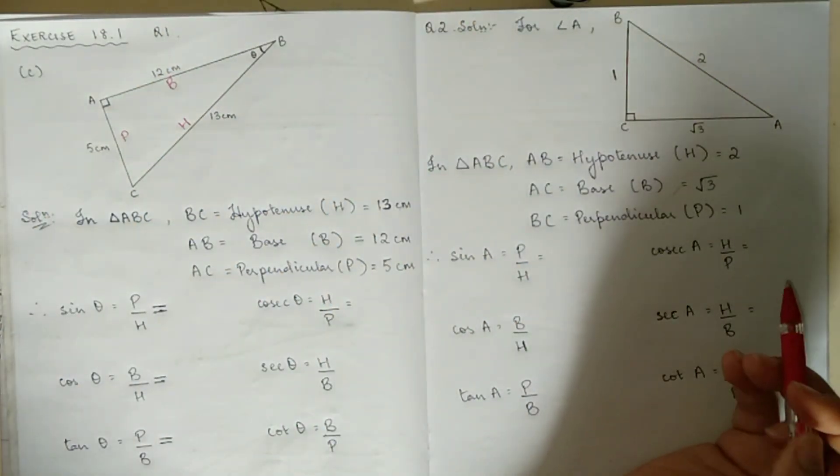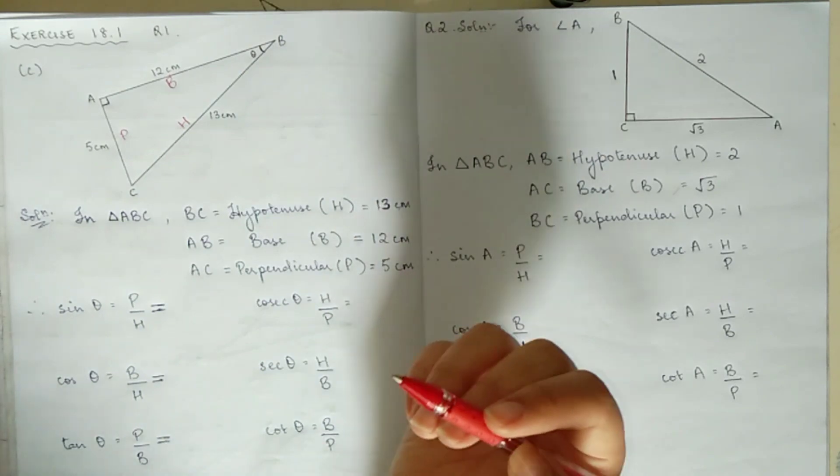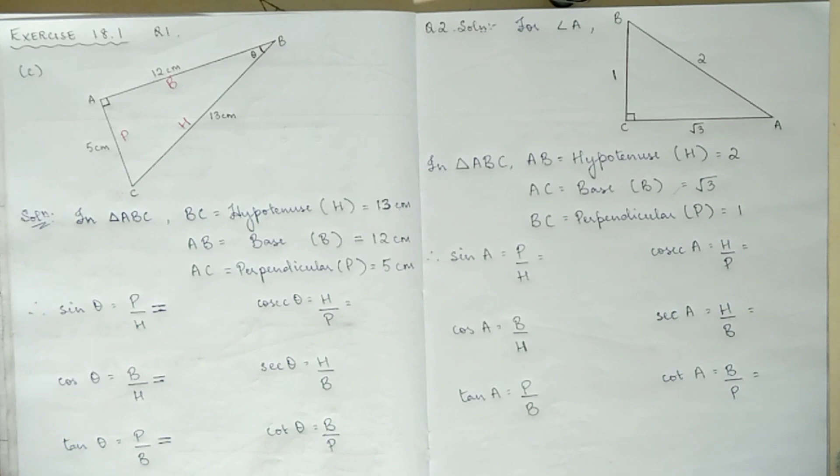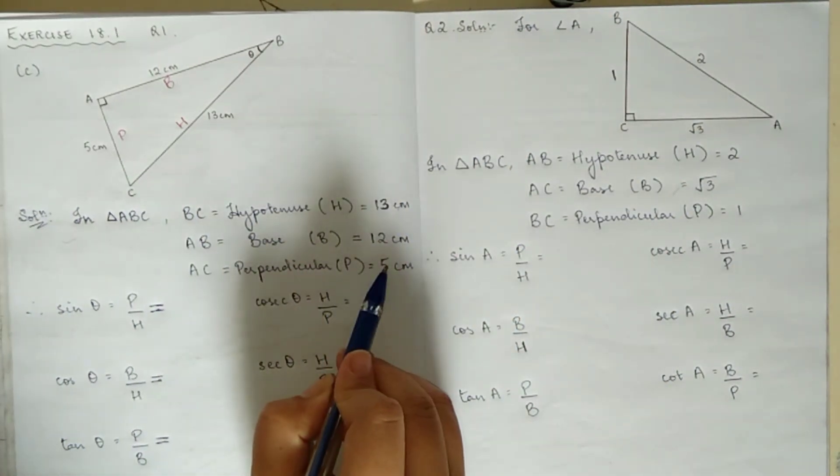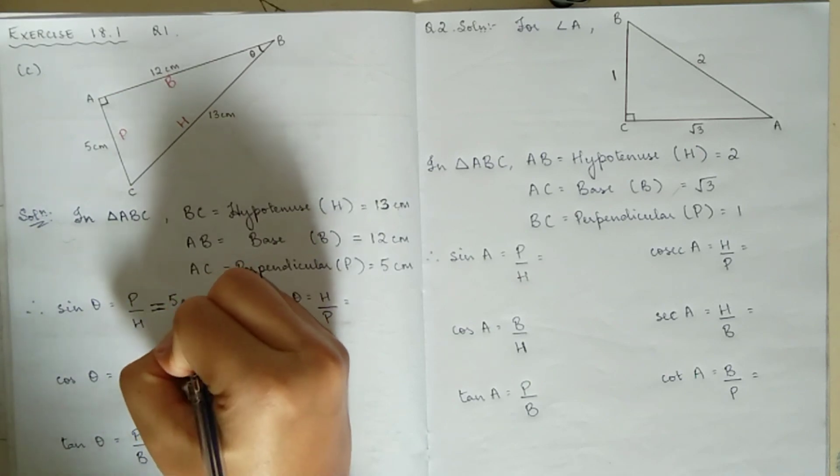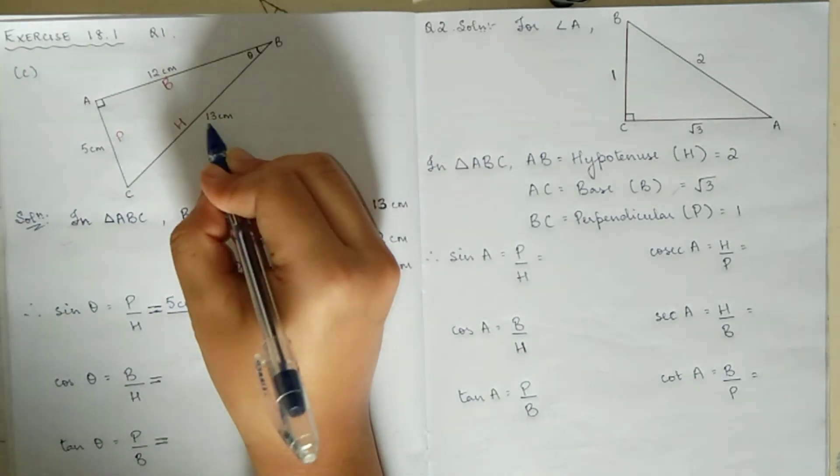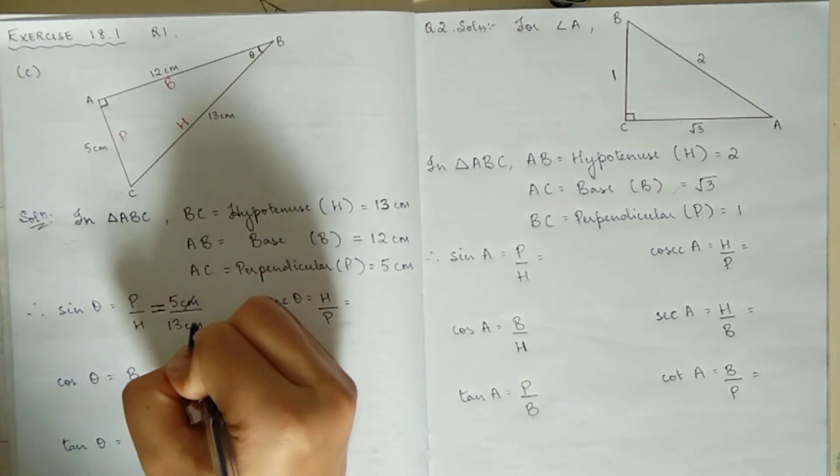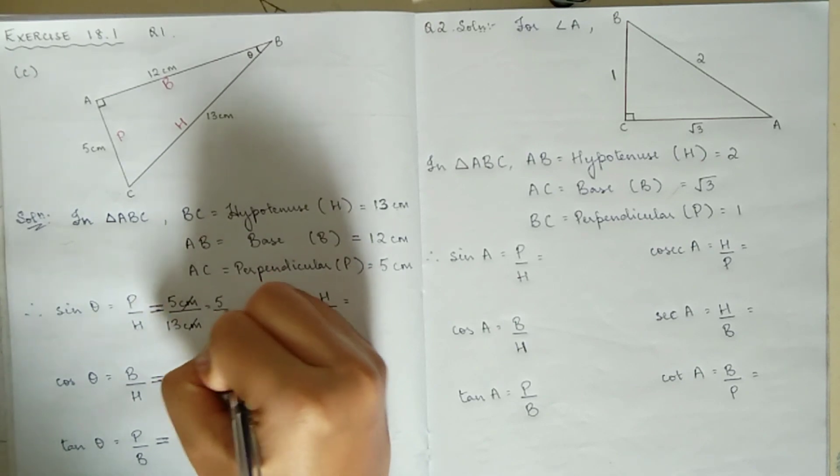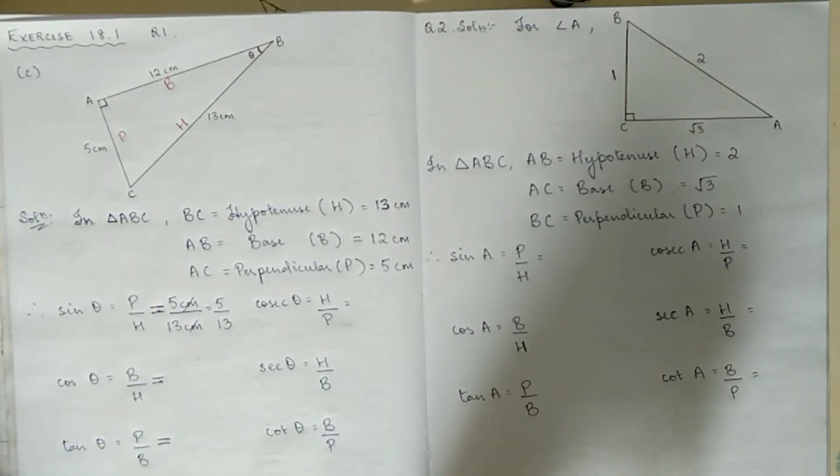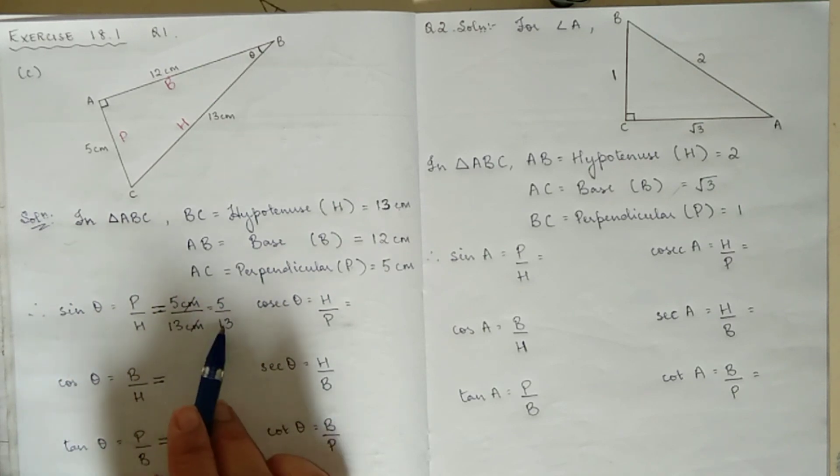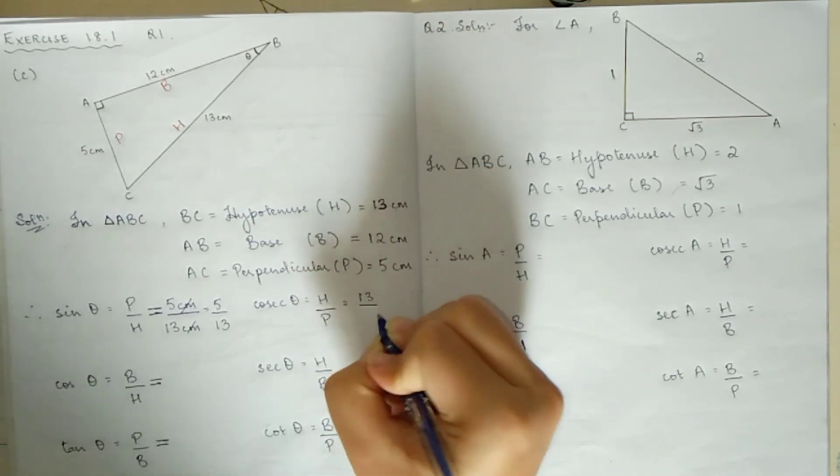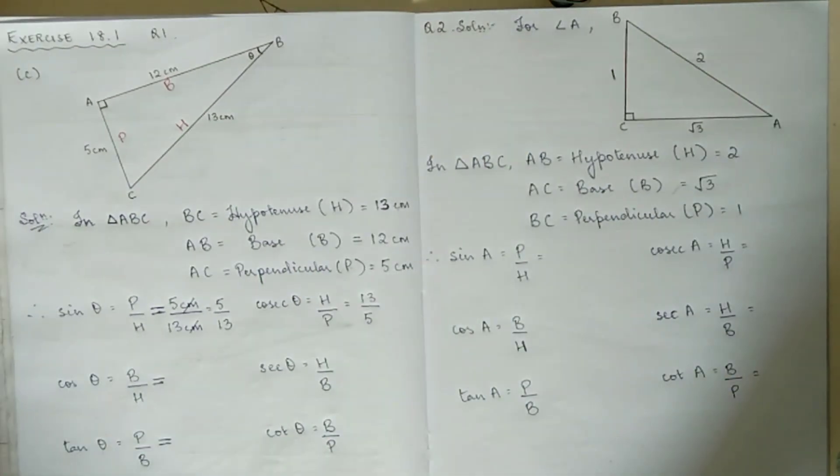We have already learned the formula. Sin is P by H. The perpendicular P is 5 cm, and the hypotenuse H is 13 cm. So sin A equals 5 by 13. You don't have to do any further calculations for this one.